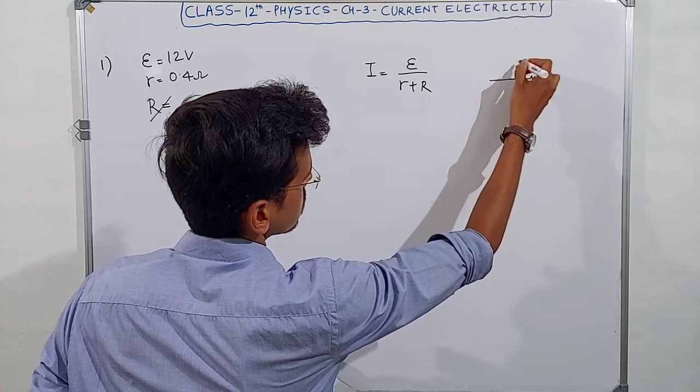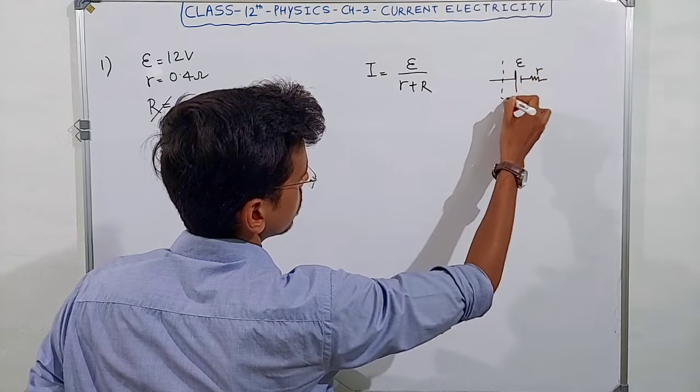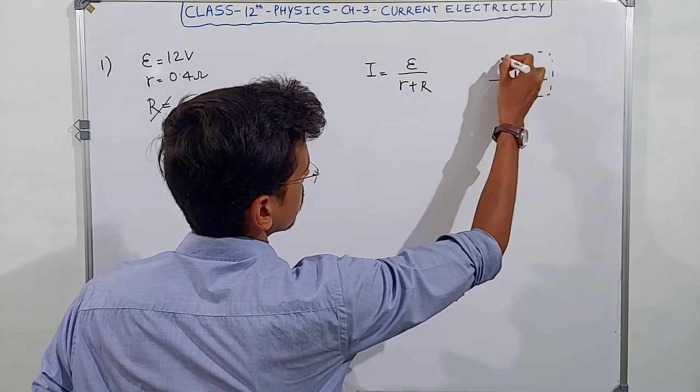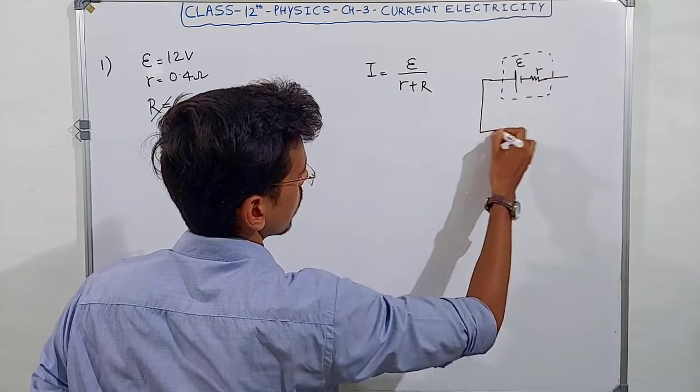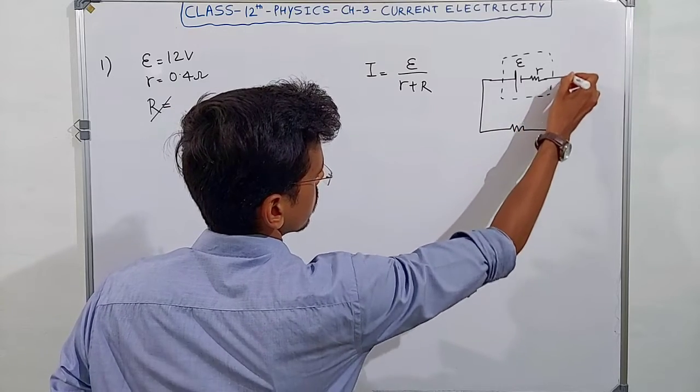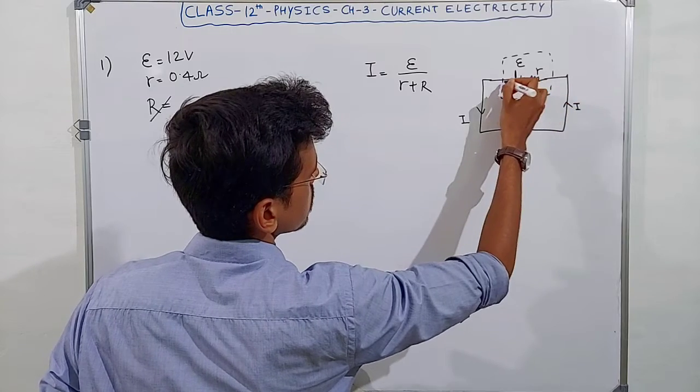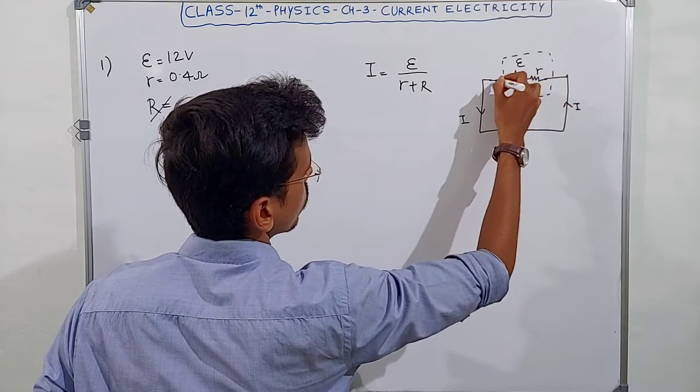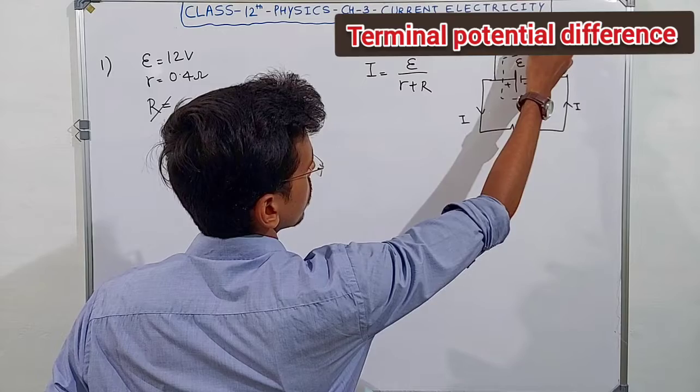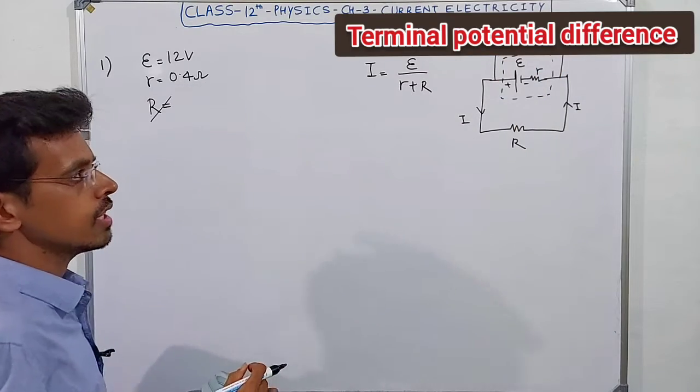This is the entire battery. Here you can put external resistance, capital R, and this current flows in the circuit, I. Plus minus, and here you can get the voltage drop. This is the entire battery.